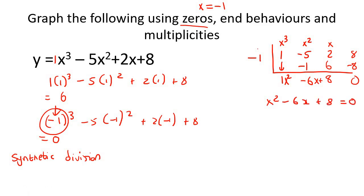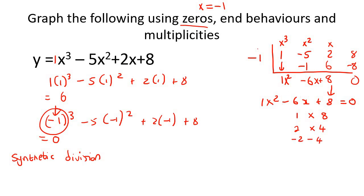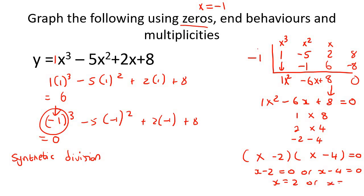Set x² - 6x + 8 equal to zero. This is a trinomial, and since the leading coefficient is 1, we just need factors of 8 that add to -6 — that's -2 and -4. So we get (x - 2)(x - 4) = 0, giving x = 2 or x = 4.